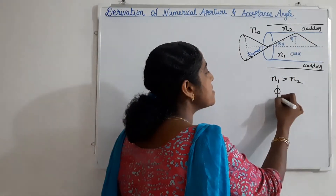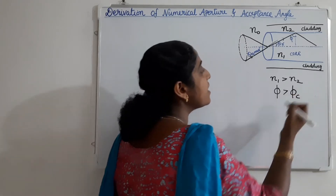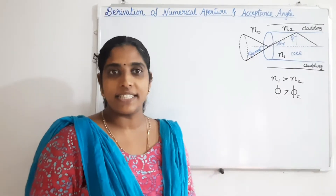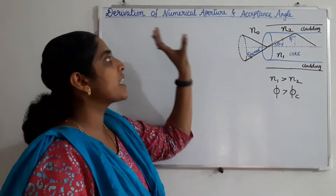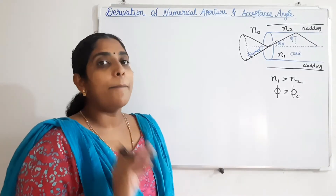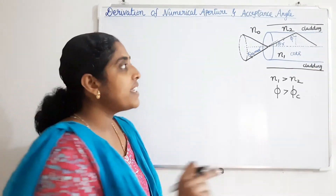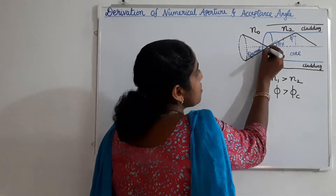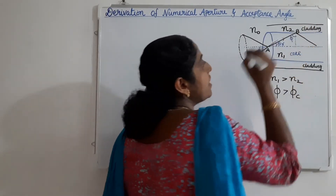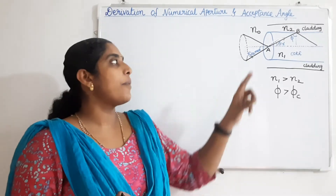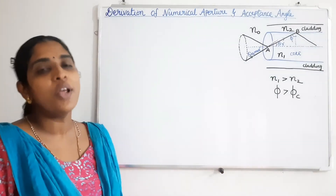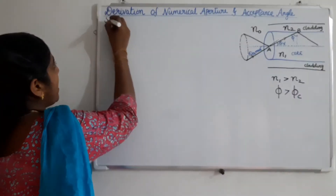As long as the angle of incidence at the core-cladding interface is greater than the critical angle, the light ray will remain within the optical fiber and undergo multiple total internal reflections. To find the expressions for numerical aperture and acceptance angle, we apply Snell's law at two points: point A, at the entrance of light into the core, and point B, at the core-cladding interface.